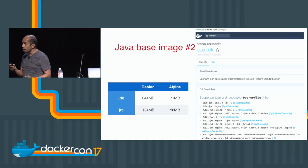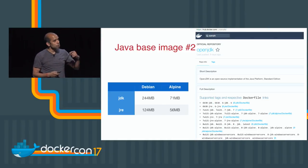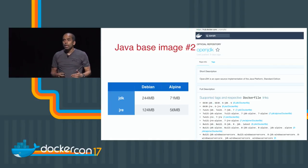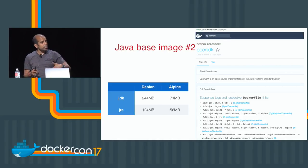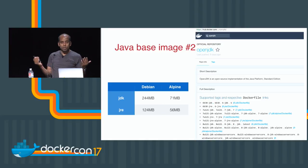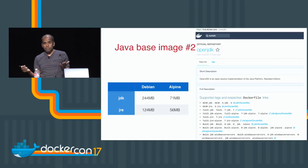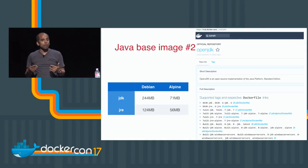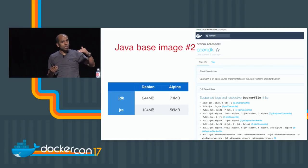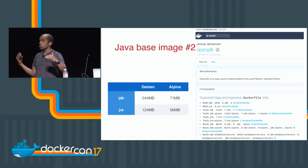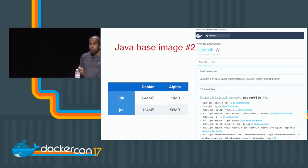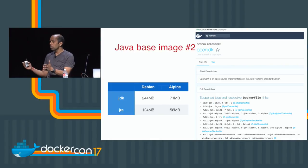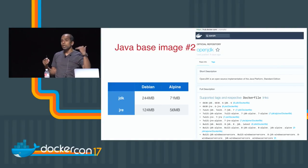Use OpenJDK as your base image — that's essentially the renamed and updated successor to the Java image, and it's getting all the latest updates. You can look at Debian-based or Alpine-based images, and JDK or JRE flavors. Using a multi-stage build — as demoed in the keynote — you use a JDK image to build your application in the first stage, then use a JRE as the base image in the second stage, excluding compilation artifacts and Maven dependencies. This significantly reduces image size.